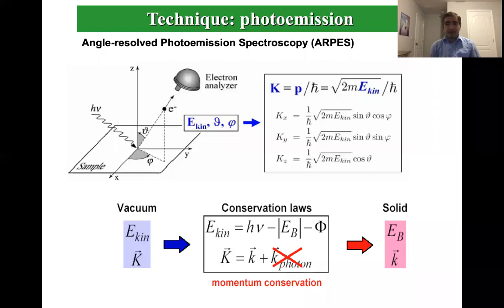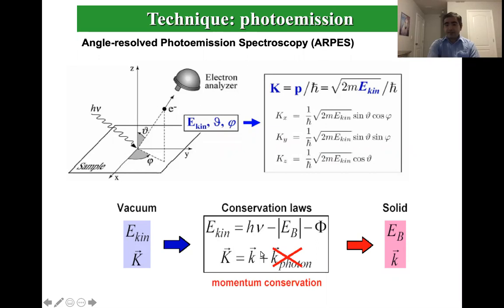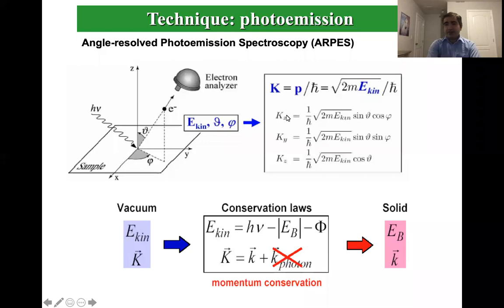The basic principle of angle-resolved photoemission spectroscopy: it is a photon-in, electron-out process using a very sophisticated hemispherical analyzer. Using conservation of energy and momentum, you can convert the kinetic energy of the scattered electron and the polar angles theta and phi to momentum and energy. By doing so you can extract the electronic structure - Fermi surface, core levels, band structure, dispersion maps, and so on. This is essentially a k-space technique giving you the energy versus momentum relation.